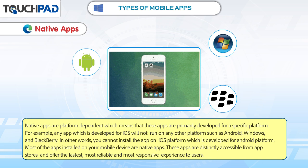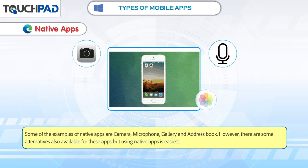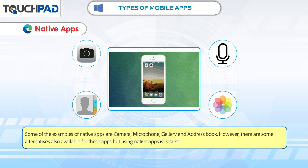These apps are distinctly accessible from app stores and offer the fastest, most reliable and most responsive experience to users. Some of the examples of native apps are camera, microphone, gallery and address book. However, there are some alternatives also available for these apps.